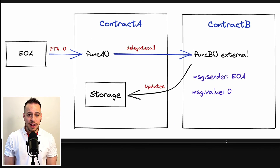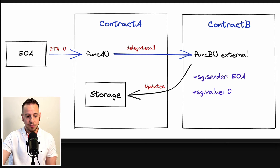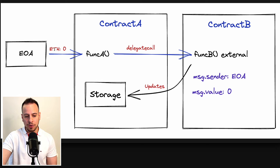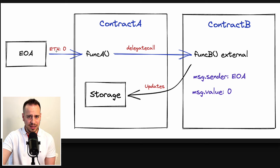Now let's understand how delegate call works. Here on the left, we have an EOA — External Owned Account — which is just an Ethereum wallet that sends transactions. We have contract A, and the EOA account is calling function A in contract A, sending zero ETH, zero message value.